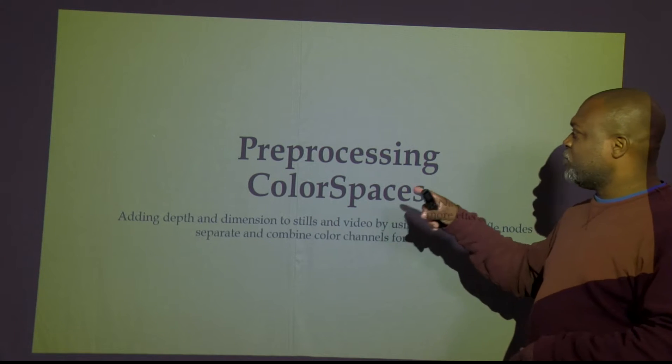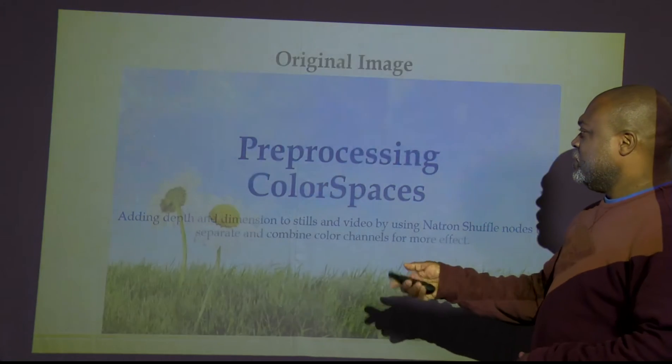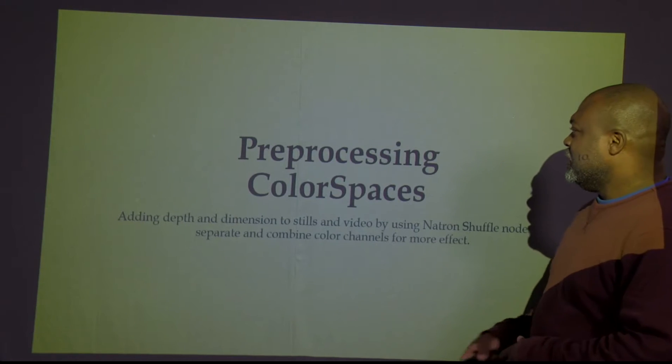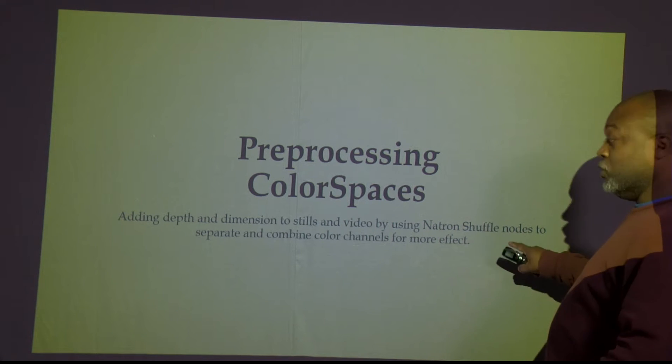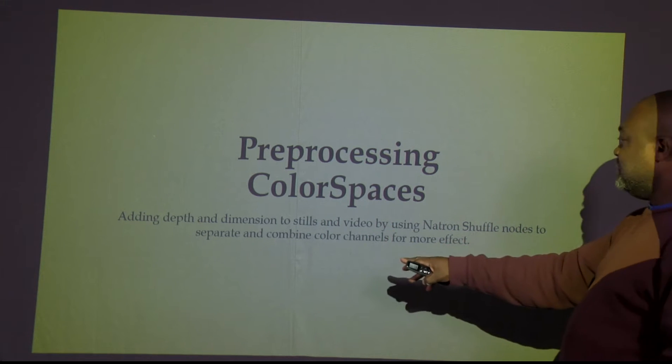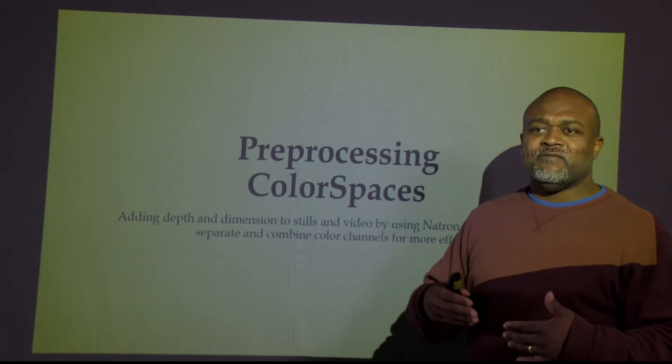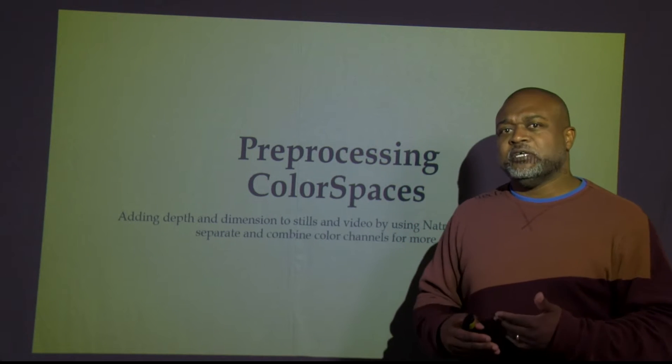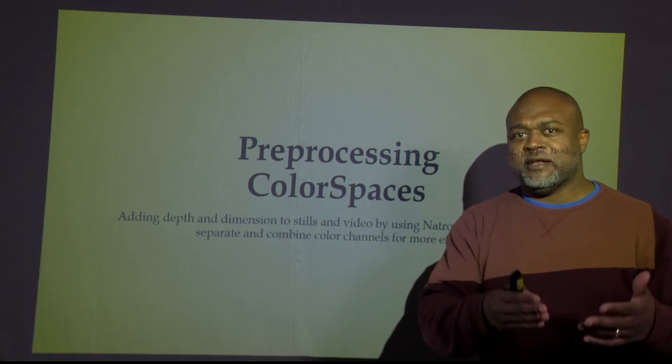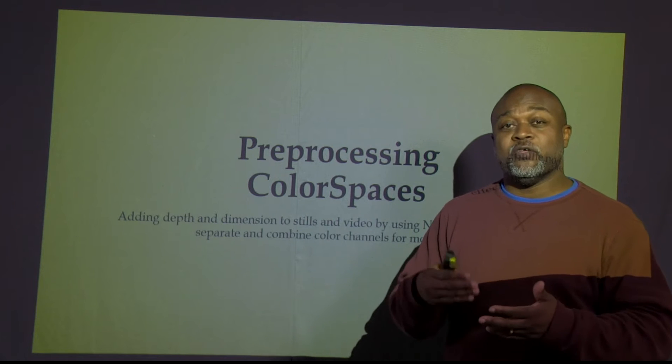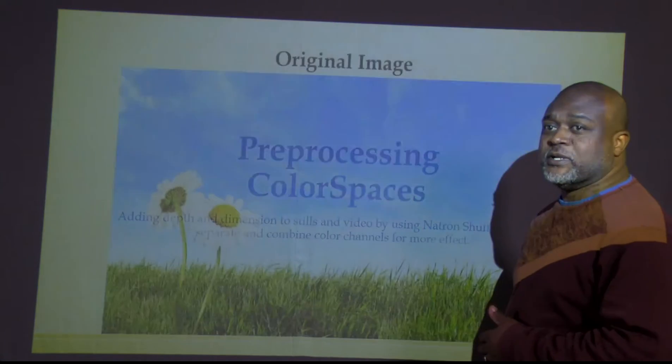What I'm doing is something that's called pre-processing of my color space. So why am I doing this? The pre-processing of color space is adding depth and dimension to stills and videos by using Natron shuffle nodes to separate and combine color channels for more effect. So what am I doing? Like I said, I want to try to break out the individual image to give me more depth and dimension of that particular image as individual color channels so I can process either the brightness or the color or the chroma of the U and V channel. So to give you an example of what I'm talking about here, go to our next slide.